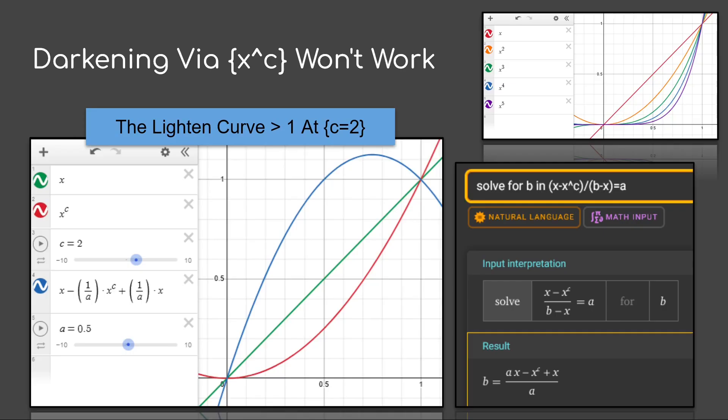So the simplest way, if we just look at a Darkening Curve, would be if we just take the color and raise it to a certain power. You'll notice a problem right off the bat here. At the second power, or just squaring, if we compute the Lightning Curve from the Darkening one, you'll notice that the Lightning Curve goes above 1. That's not going to work. So we're going to need to come up with a different solution here.